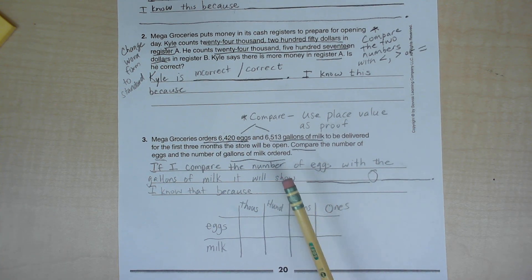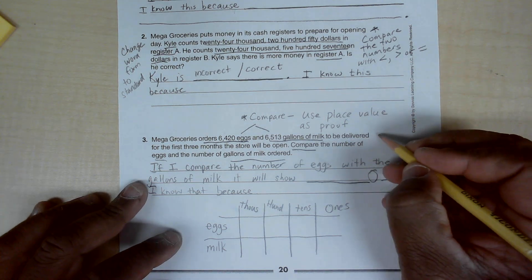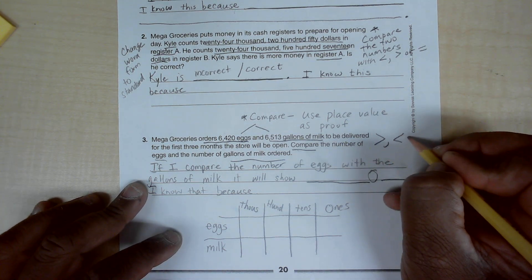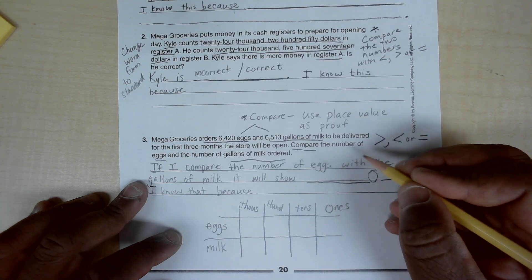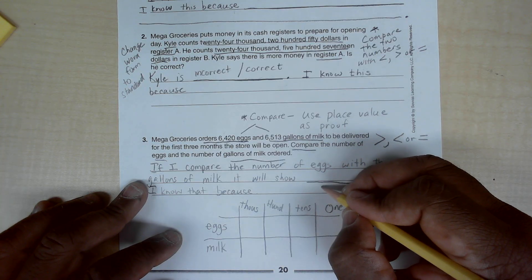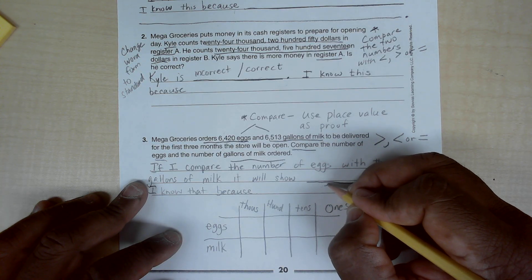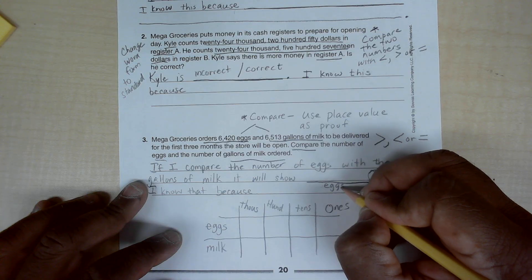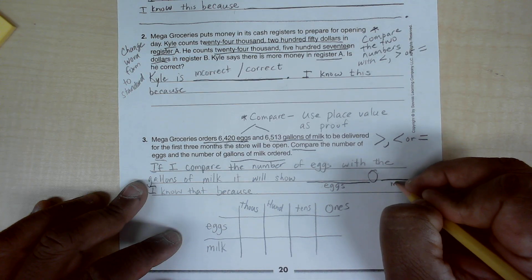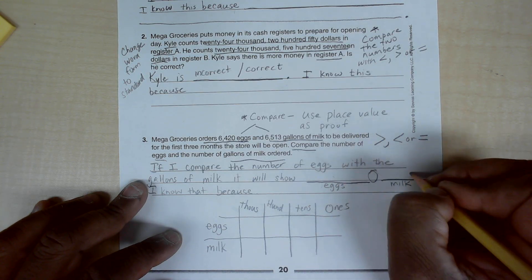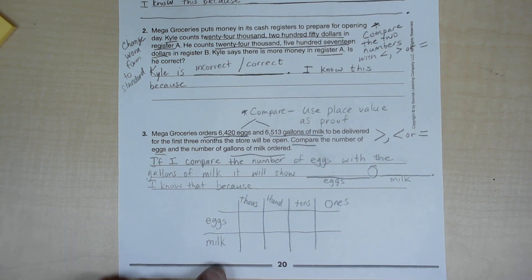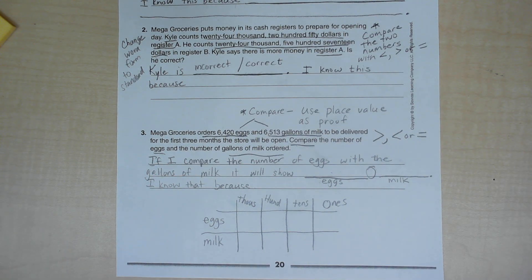What goes in the blank? The two numbers. What goes in the circle? Either the greater than, less than, or equal to symbol. The egg number will go here and the gallons of milk can go here with the numbers for each, and then compare them. Or you can use a chart below.